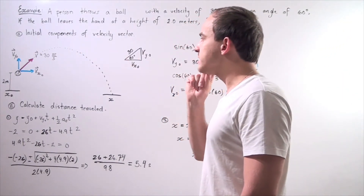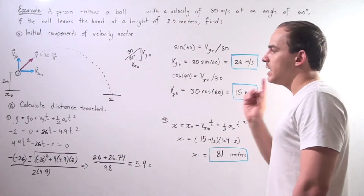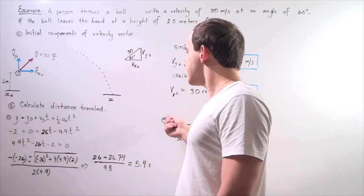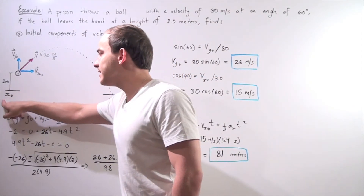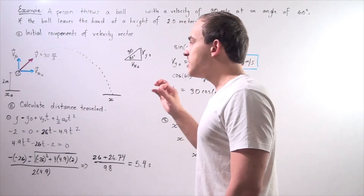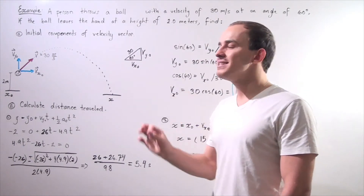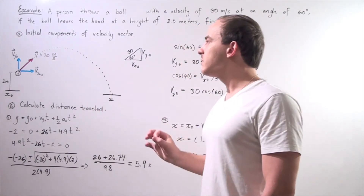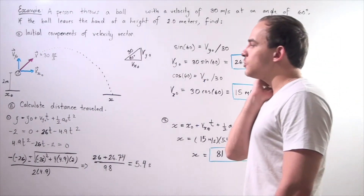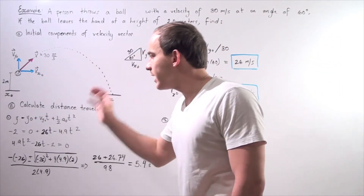Now let's move on to part B. In part B, we want to calculate the entire distance starting from x-naught initial of 0 and ending at our x-final. In the first step, we're going to calculate the time our ball spends in the air. To calculate that time, we have to use the y equation — the equation along the y-axis.